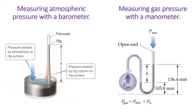A manometer is a device used to measure the pressure of a contained gas. It works similarly to a barometer in which gas pressure pushes on a column of mercury. The difference in height between the mercury columns is directly related to the pressure of the gas. But no one really uses mercury manometers anymore either. We have much simpler instruments that give us a readout of the pressure anytime we want.